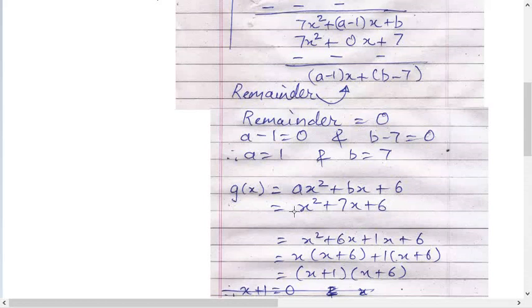7x factorization: 6, 1 to 6. Last first and last multiplication and middle addition. 6, 1 to 6, and 6 plus 1 is 7. So x square plus 6x plus 1x plus 6.